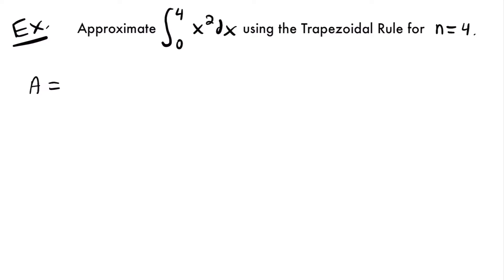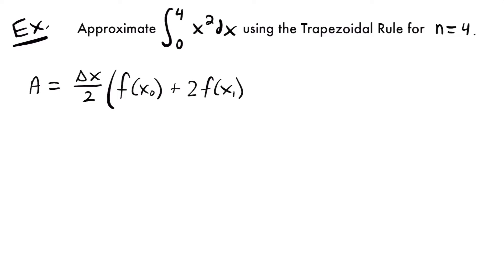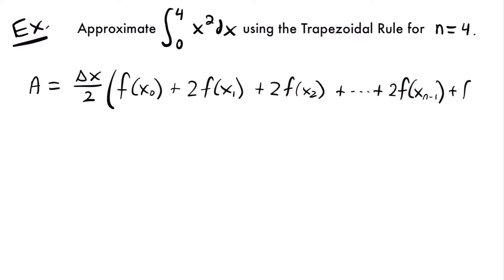The area is equal to delta x, the width of our trapezoids, divided by 2, times f of x sub 0, plus 2 times f of x sub 1, plus 2 times f of x sub 2, and we add all the way up to 2 times f of x sub n minus 1, and then plus f of x sub n.